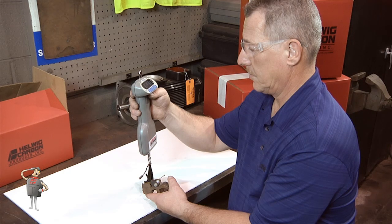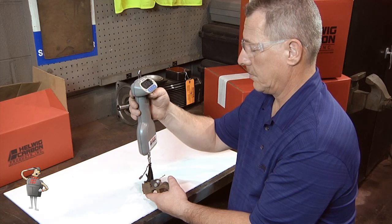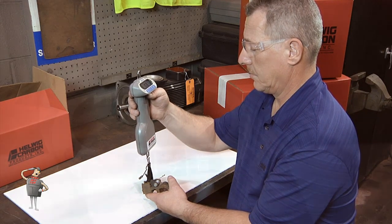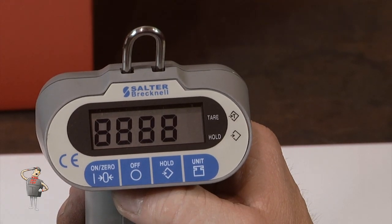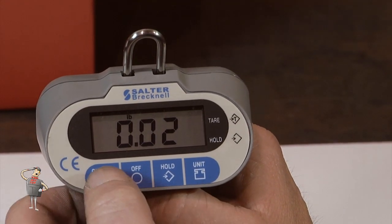Measuring spring force on a finger-type spring is also a three-step process. First, turn on the digital scale and zero the scale.